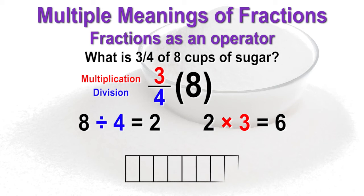The model shows eight units partitioned or divided into four equal parts, which equals two units. The two units are then multiplied by the numerator three for a final answer of six units. Three-fourths of eight is six.